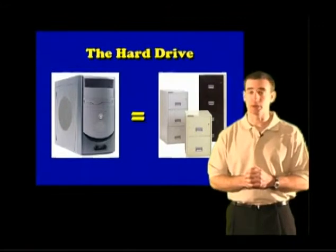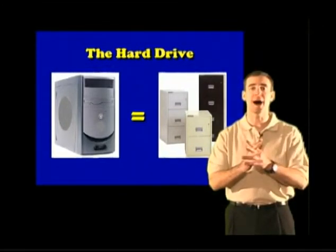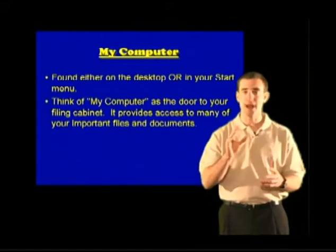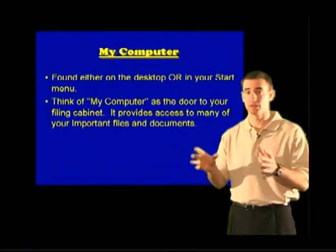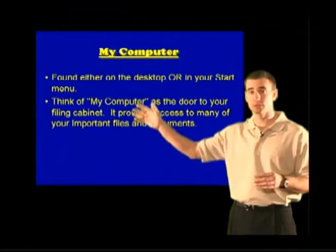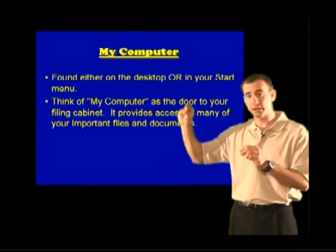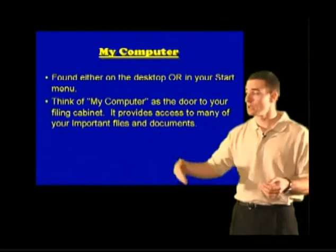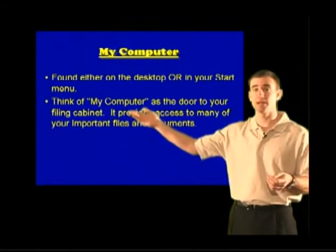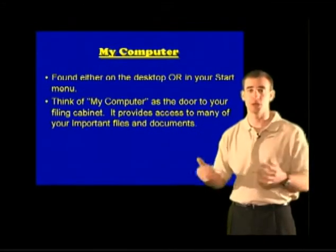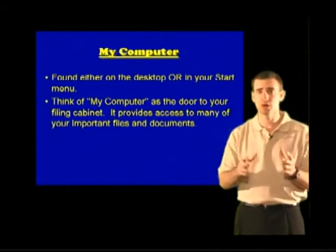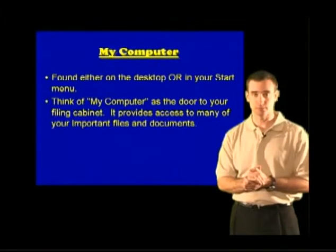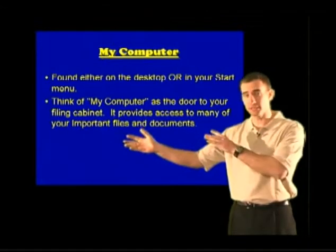Now, to find this filing cabinet on your computer, you need to find a location called My Computer. My Computer is going to be located in one of two locations. My Computer — or your filing cabinet, the entrance to your filing cabinet — will be located either on your desktop. A lot of older computers have a little icon on the desktop. You'd simply double-click the My Computer icon and you'd be able to see all the drawers or storage areas in your filing cabinet. With newer computers, they took My Computer off the desktop and placed it inside the Start menu. So you know that My Computer will be in one of two places: either on your desktop as an icon, or within your Start menu.